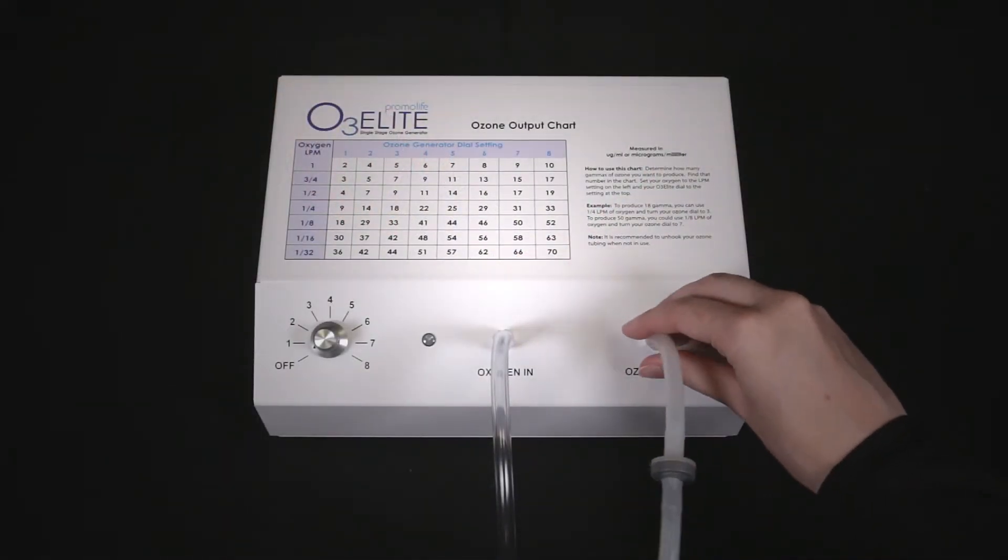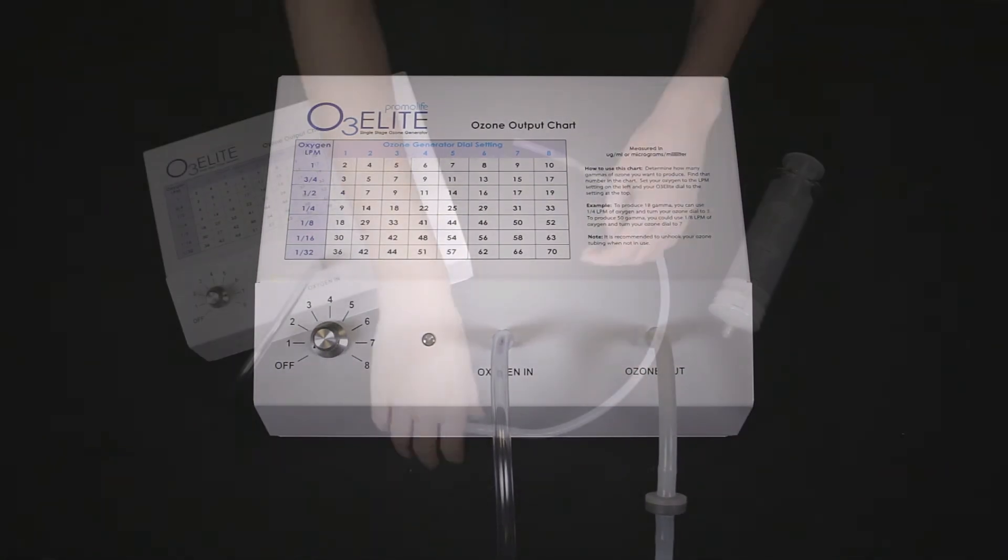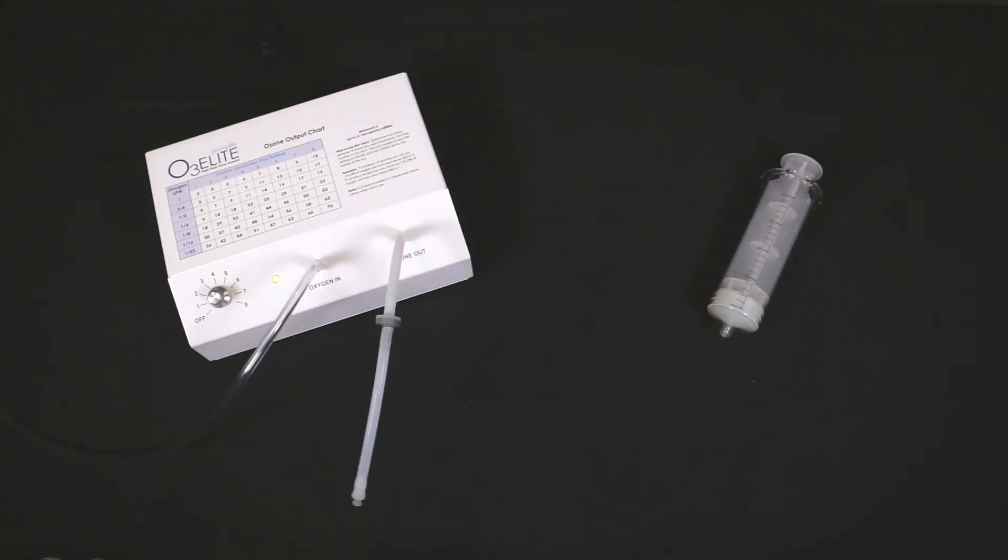Now, to start setting up your ozone insufflation syringe, you will need to connect your tubing with the check valve to the ozone outport of the ozone generator and disconnect the 5 feet of silicone tubing from this piece. We recommend turning on your oxygen and ozone before connecting the syringe to ensure you have the correct concentration.